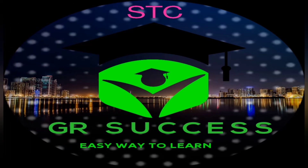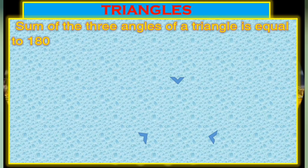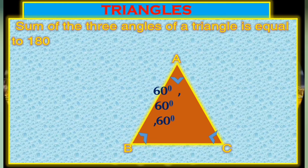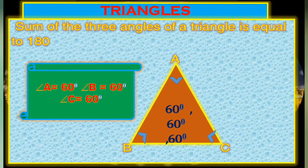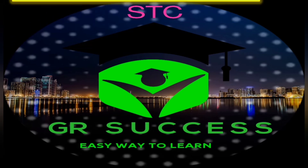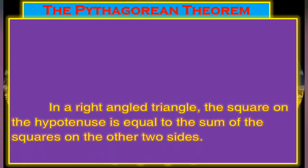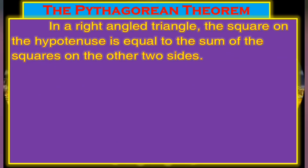The most important triangle principle: the sum of the three angles of a triangle is 180 degrees. If you look at a right angle triangle, the square on the hypotenuse is equal to the sum of the squares on the other two sides — that is Pythagoras' theorem.